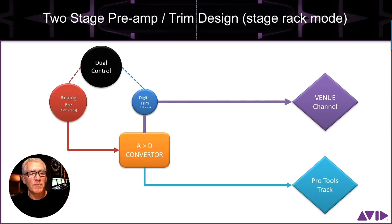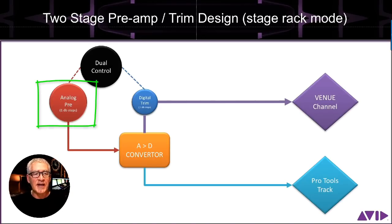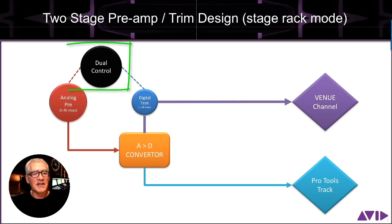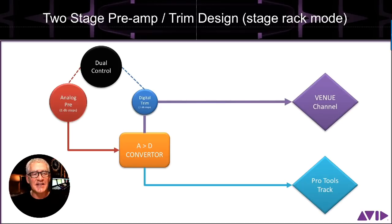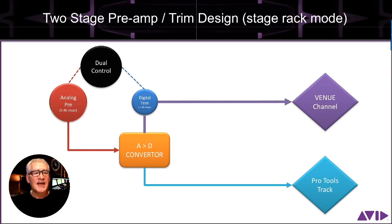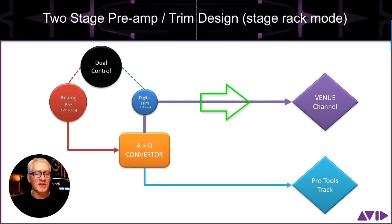What you see here is an actual block representation of our input control on the control surface. The analog pre and the digital trim are separate from each other, but they are all part of one gain control on the control surface — you can't control one without controlling the other. The analog pre is a stepped preamp, and in the case of S6L preamps, it is in one dB steps. However, the digital trim steps in one-tenth of a dB steps, and the two work together additively to equal the entire channel gain going into your input path.